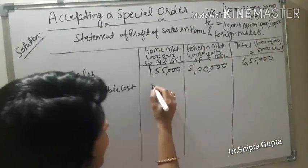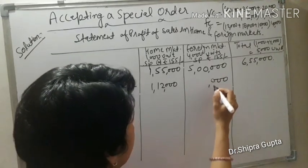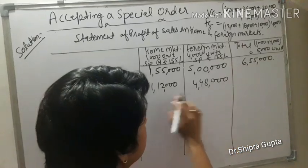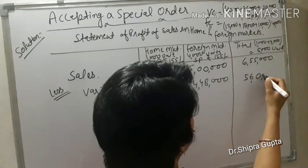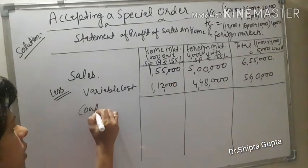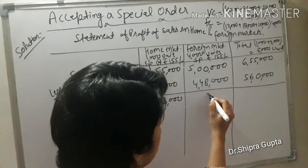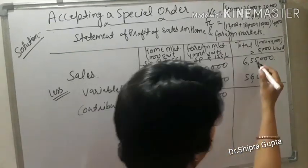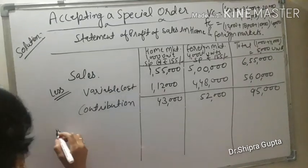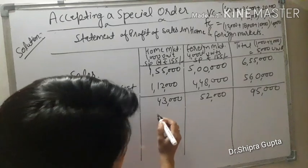Less variable cost (marginal cost): total variable cost for 1000 units is ₹1,12,000. For the foreign market of 4000 units, we multiply by 4 because variable cost varies according to units, giving ₹4,48,000. Total variable cost for 5000 units = ₹5,60,000. Deducting this from sales gives contribution: home market ₹43,000, foreign market ₹52,000, total contribution ₹95,000.